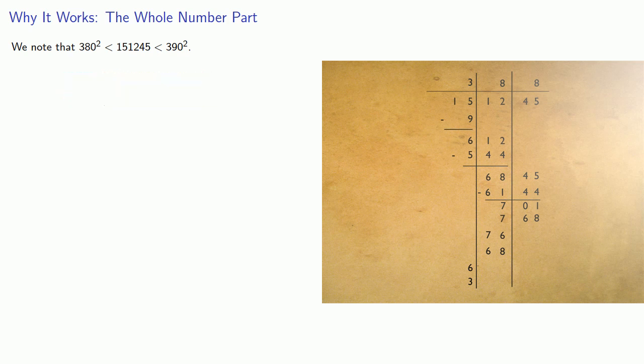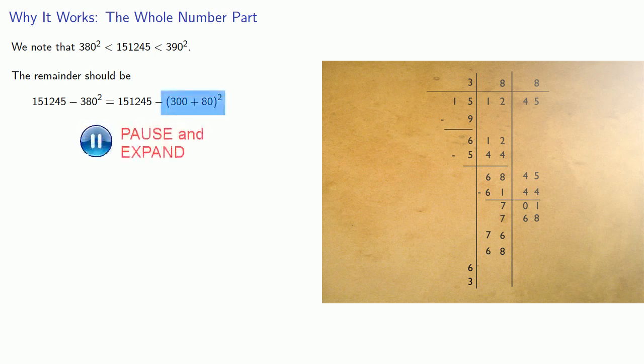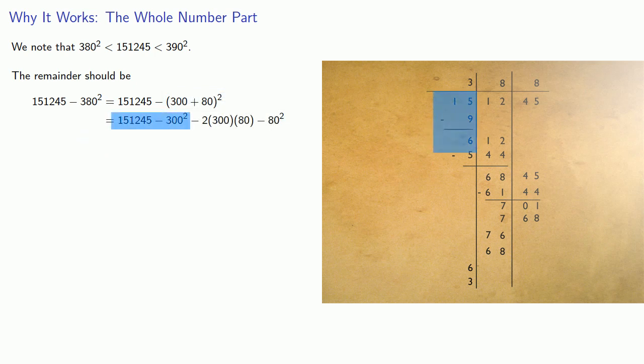If we find that remainder, it's really 151,245 minus 380 squared. That's the same thing as subtracting (300 + 80) squared. If we expand this term, the first thing to recognize is we've already subtracted 300 squared, so we don't need to recompute this first part. Meanwhile, the remaining terms have a common factor of 80, so we could remove that.